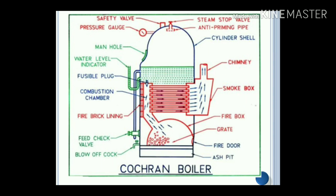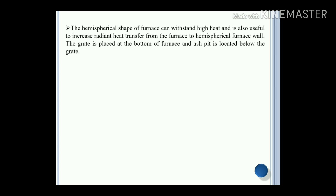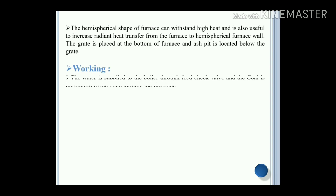Here is the total nomenclature of the Cochran boiler. The hemispherical shape of the furnace can withstand high heat and is also useful to increase the radiant heat transfer from the furnace to the hemispherical furnace wall. The grate is placed at the bottom of the furnace and the ash pit is collected below the grate. Working of the Cochran boiler: water is supplied to the boiler through the feed check valve and coal is introduced to the grate through the fire door.